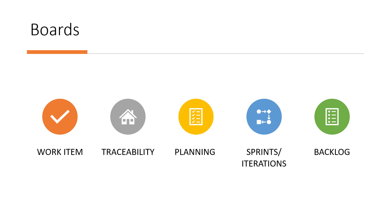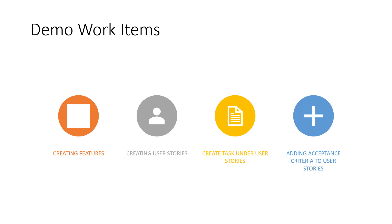Without wasting time, we'll flip to Azure Boards and see how we can create different work item types. In the first demonstration, we are going to create features, we are going to create user stories, we are going to create tasks under a particular user story, and we are going to add some acceptance criteria to a user story. I'll quickly flip to my Azure instance and let's see how we can perform these activities.